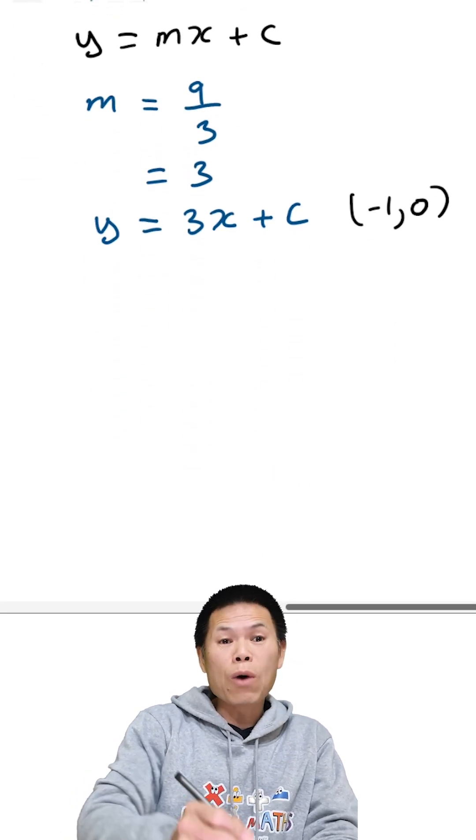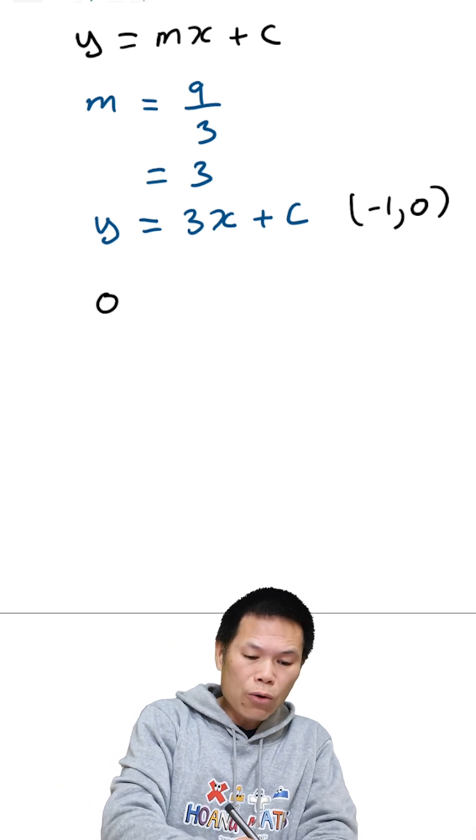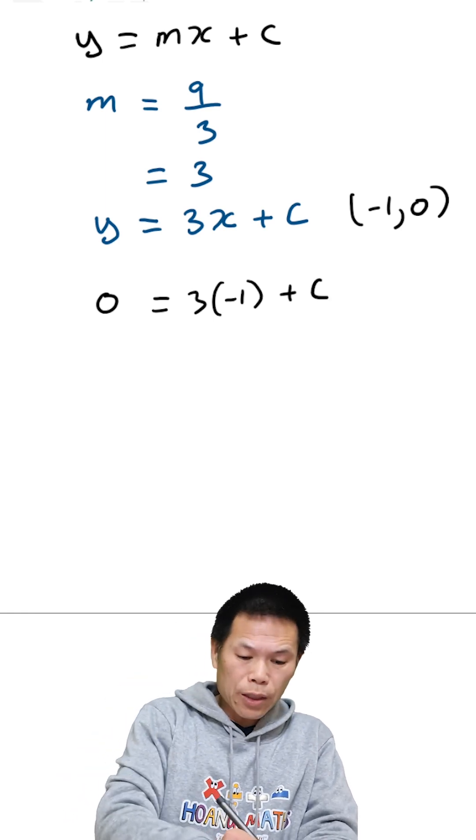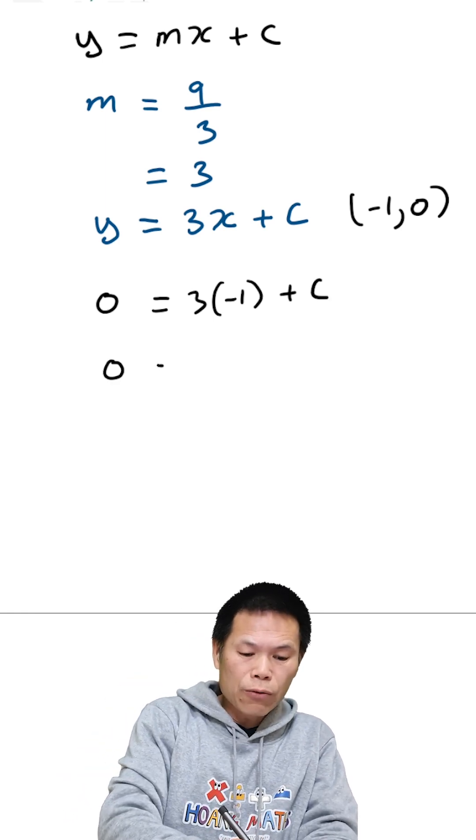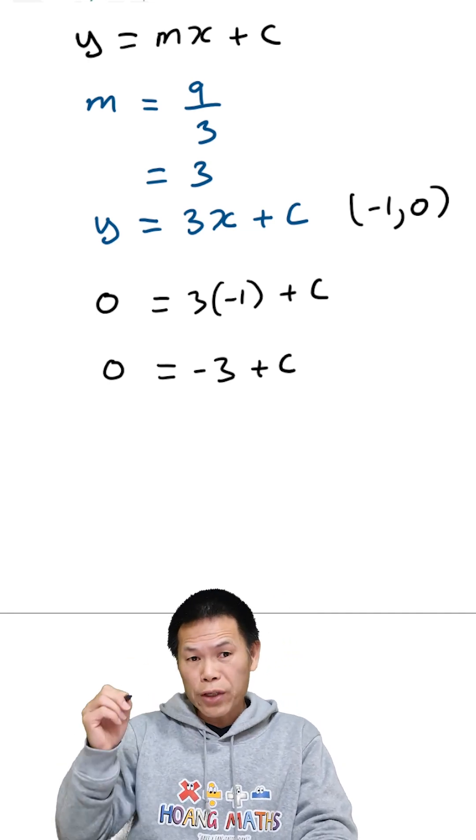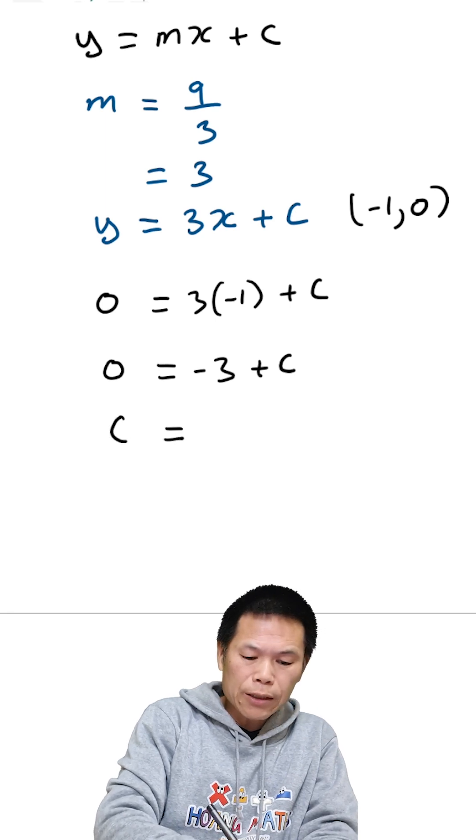So when x is negative 1, y is equal to 0. So that becomes 0 equal to 3 times negative 1. We add c. 3 times negative 1 is negative 3. So 0 equals negative 3 plus c. And we move negative 3 on this side becomes positive. So c is 3.